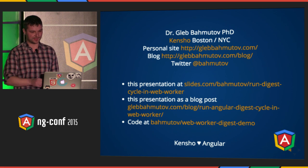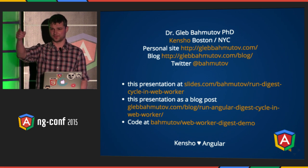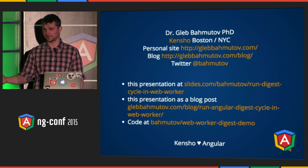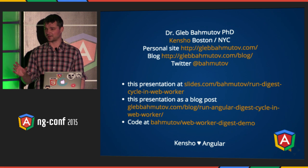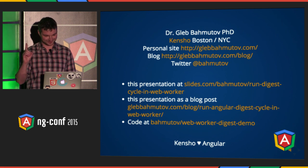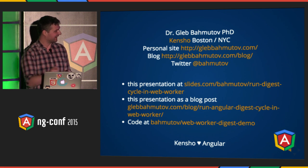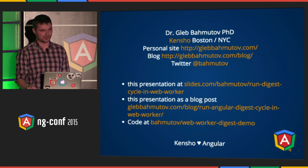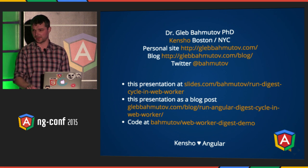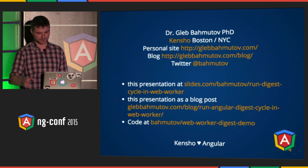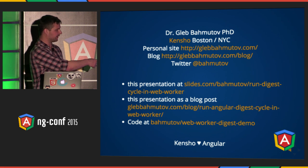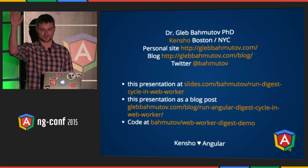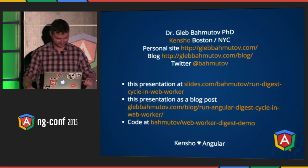At the end of my talk, I have 35 seconds — I'll be there. If you have any questions, I charge very cheaply to answer: just one beer per question. You have the code, you have a blog post. Please check out Kemsure — we're a financial insight company in Boston and New York City. We open source several Angular libraries. We love Angular, as you can see at the bottom of our slides. Thanks.